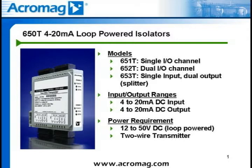Process current outputs are also 4 to 20 milliamps DC analog signals and are current limited to 36 milliamps DC. Since these are two-wire transmitters, 12 to 50 volts DC is required to drive the output loop. The supply voltage must be chosen to supply full-scale current to the load, 12 volts to the isolator, and any voltage line drop.